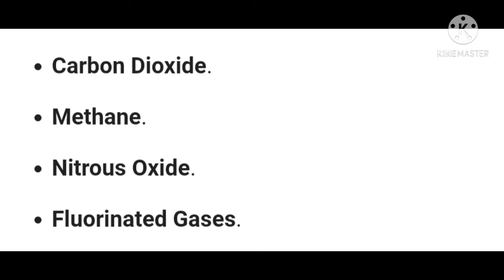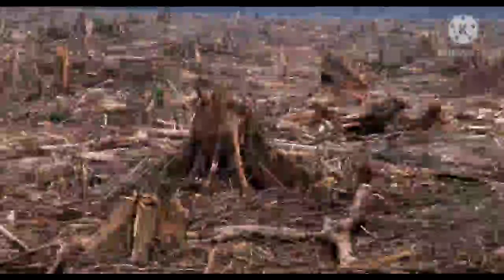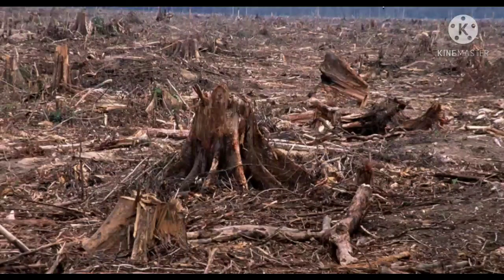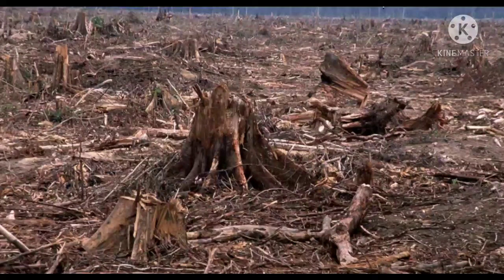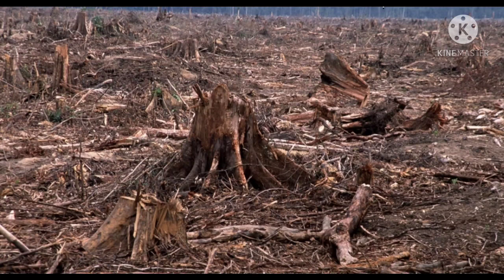The next topic is deforestation. Trees play a very important role in the carbon cycle. They maintain the balance in the environment by converting CO2 in the air to oxygen through the process of photosynthesis, thus acting as a natural regulator of carbon dioxide. The more the trees, the less carbon dioxide in the atmosphere and the more oxygen.